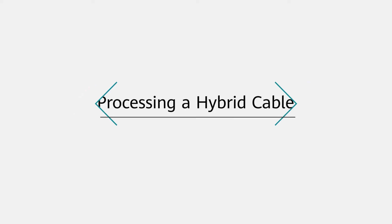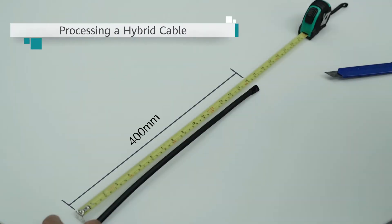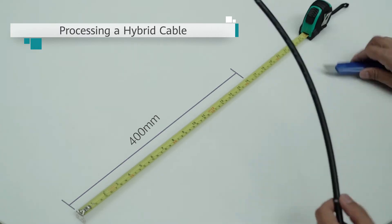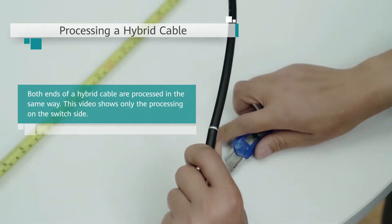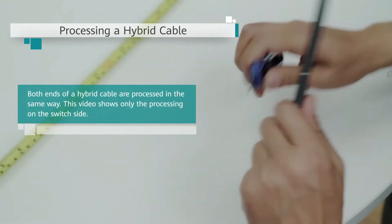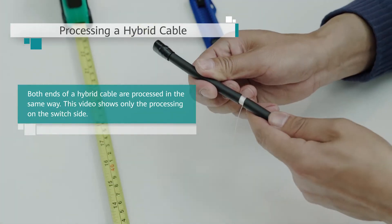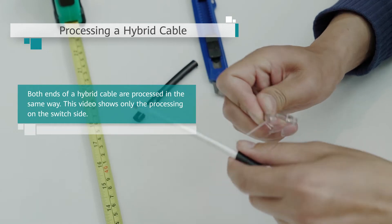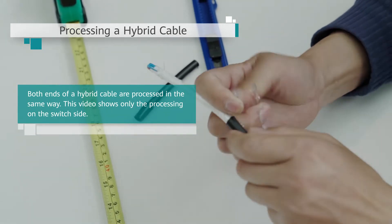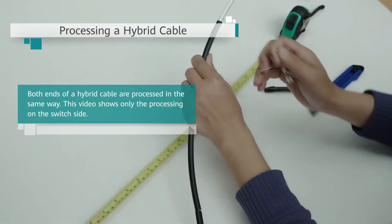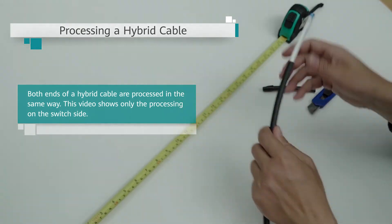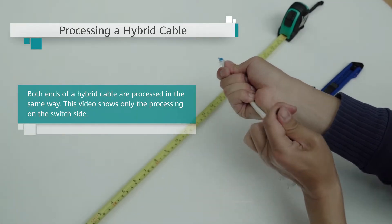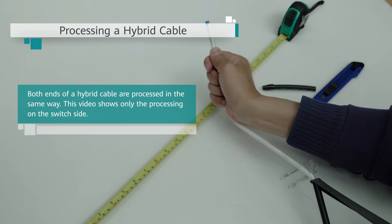Processing a hybrid cable: First, use a utility knife or a cable stripper to peel off a 400 mm long section of the outer sheath from one end of a hybrid cable for connecting to a switch and peel off 300 mm from the other end for connecting to an AP. You are advised to peel off the outer sheath in two or three sections, allowing the outer sheath to be easily peeled off and preventing optical fibers from being broken.